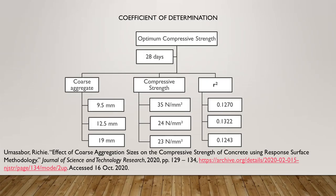Since the coefficient of determination values are closer to zero instead of one, the linear model cannot predict an optimum compressive strength of concrete for any of the three different sizes of coarse aggregate. This experiment can demonstrate an inverse relationship between the size of coarse aggregate and the coefficient of determination values.